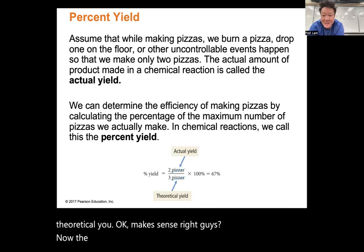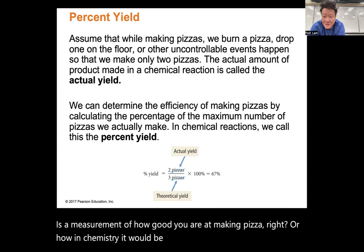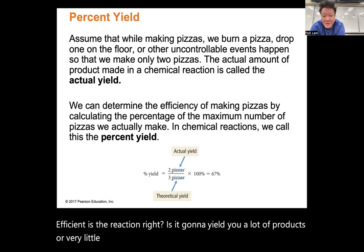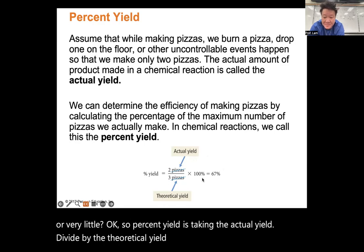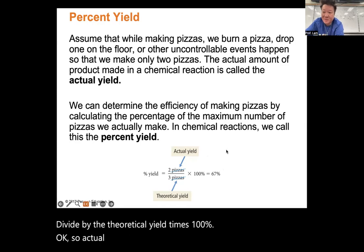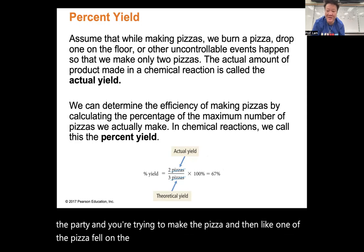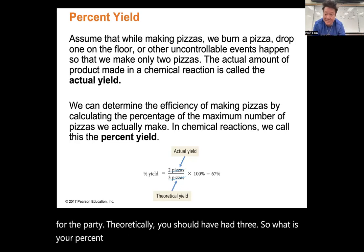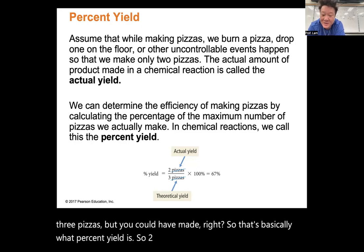Percent yield measures how efficient the reaction is. Percent yield = (actual yield / theoretical yield) × 100%. If you theoretically could make 3 pizzas but one fell on the floor and you only have 2, your percent yield is 2/3 × 100% = 67%. In chemistry, the actual yield is what you measure in the lab; the theoretical yield is calculated from stoichiometry.